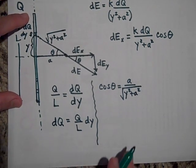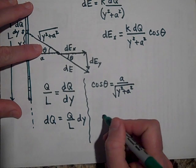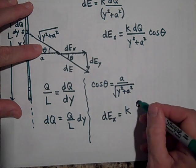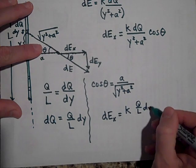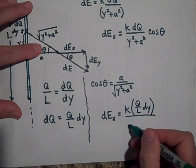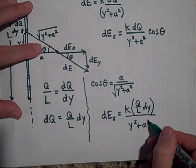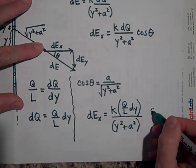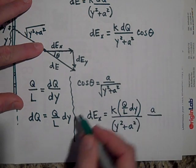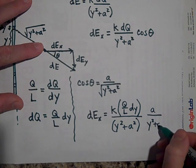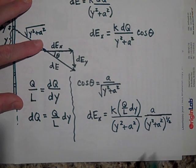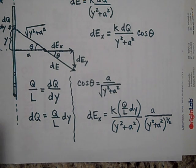So I can put that into there. When I do, I get that dE sub x, putting all that stuff in there, is k times dQ, which is Q over L times dy, times y squared plus a squared, times the cosine of theta which is a over the y squared plus a squared. I'm going to rewrite this a different way: instead of putting the square root, I'm going to say it's to the one half power.